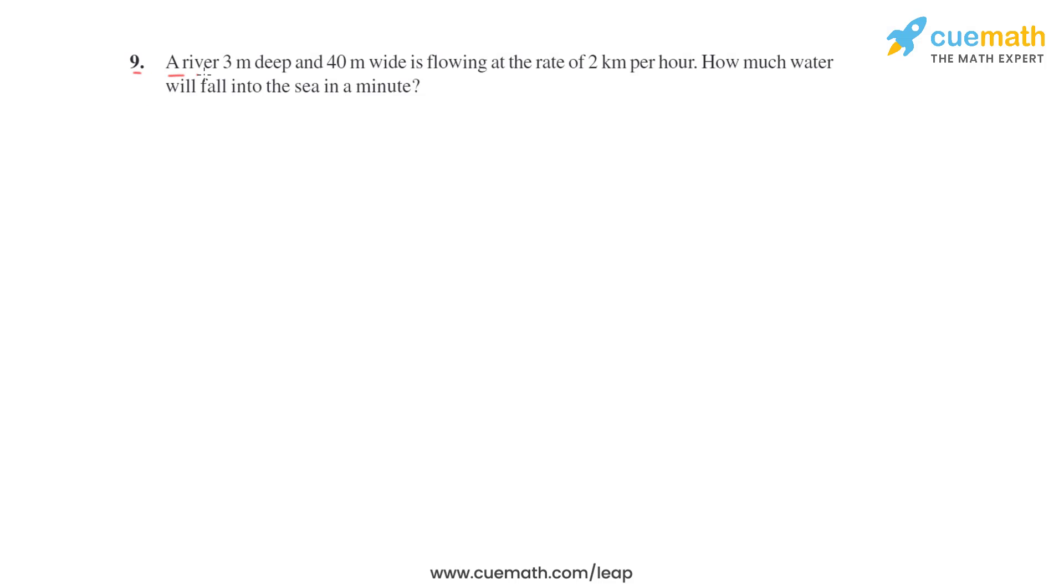In the ninth question, a river 3 meters deep and 40 meters wide is flowing at a rate of 2 kilometers per hour. The question asks how much water will fall into the sea in a minute. They have given the width and depth of the river, and its flow rate is 2 kilometers per hour.